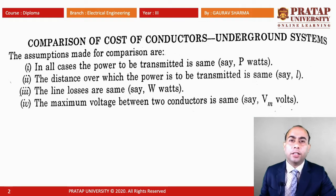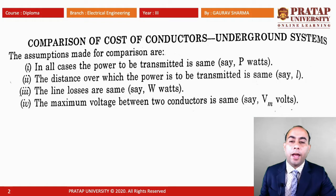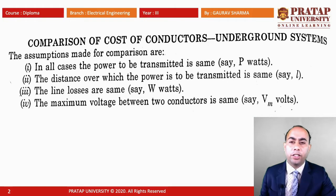For the underground system, for comparison purposes, we have to make some assumptions. In all cases, the power to be transmitted is the same, which is P watts, and the distance over which the power is transmitted is L. The line losses are the same, assumed to be W watts, and the maximum voltage between two conductors is the same, which is VM volts. These assumptions are made for the comparison of the cost of conductor material in the underground system.